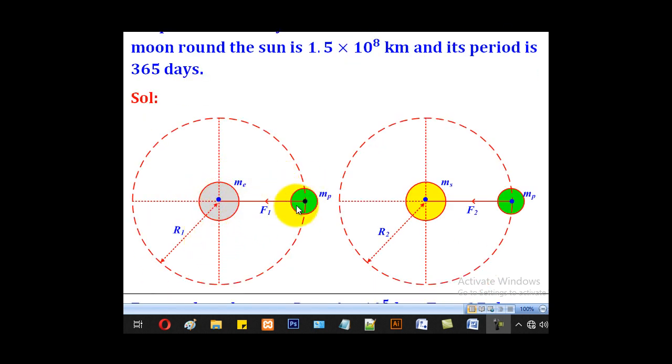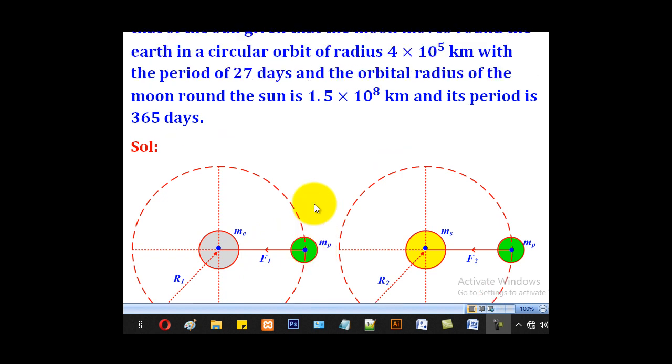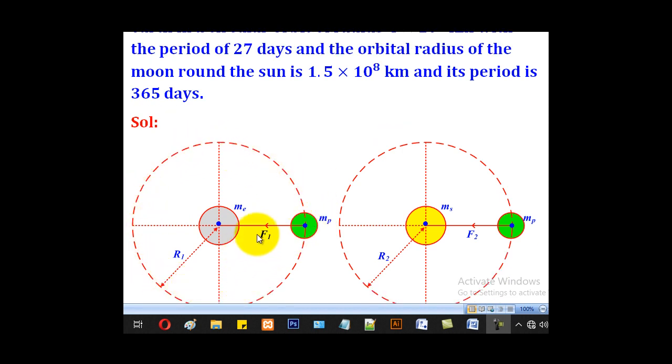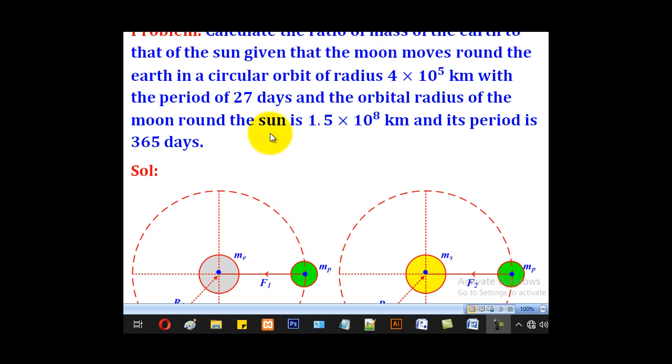This will be the Earth and this will be the planet or the Moon. It revolves around the Earth with a period which was given as 27 days and the radius as 4×10⁵ km.